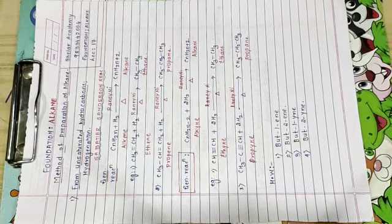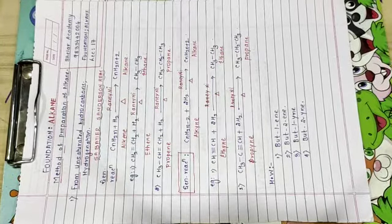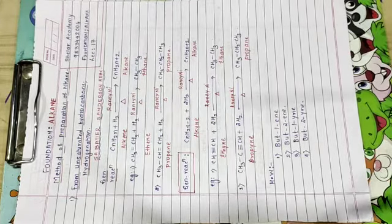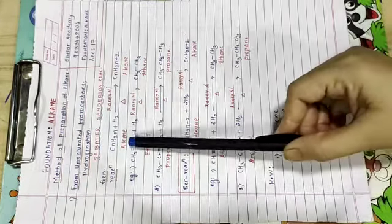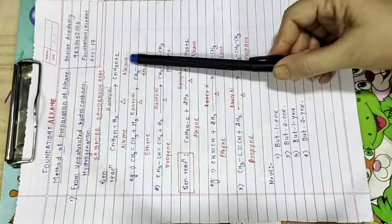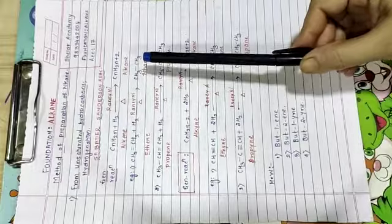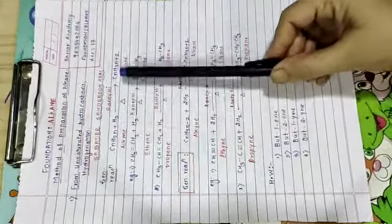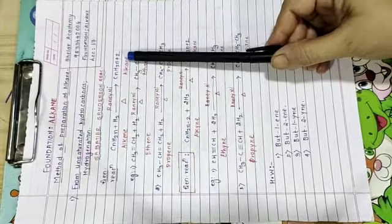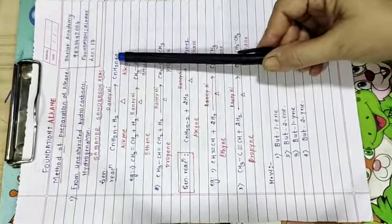Okay, as we said, see the very first I have written the general reaction to prepare alkane. Alkene general formula is CnH2n and alkane is CnH2n plus 2. So what is the difference in the two? In alkane, two hydrogen atoms are more, right?